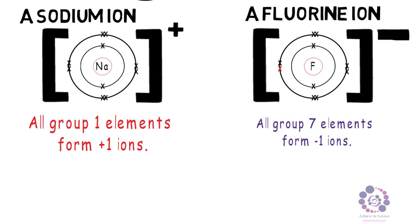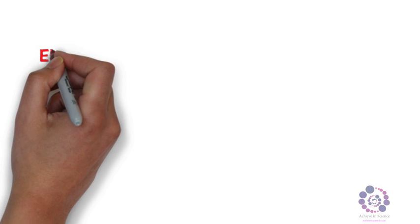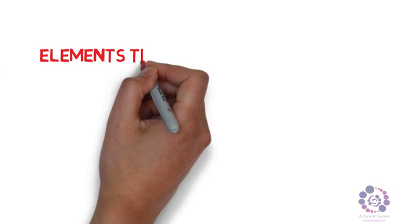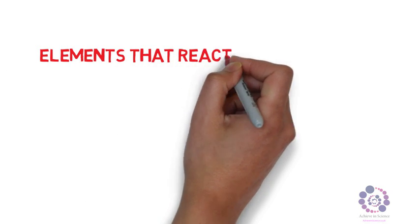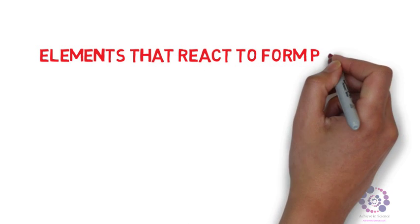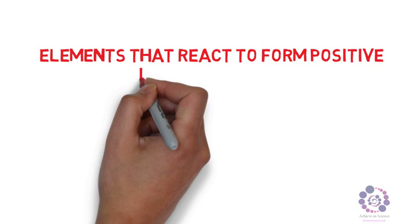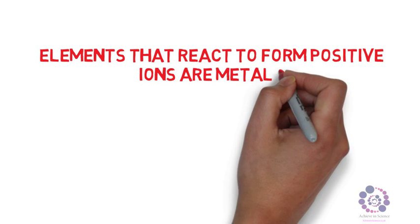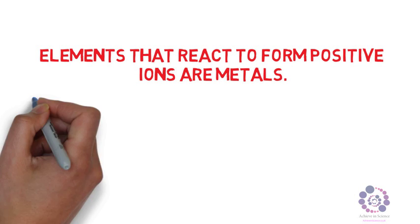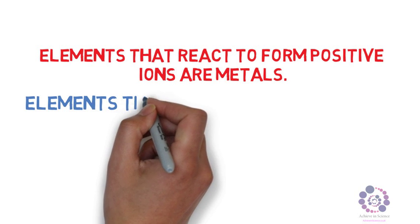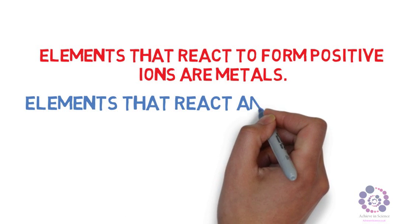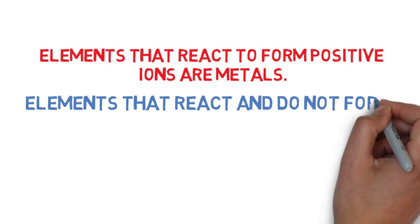As these are oppositely charged, they want to interact with each other. Therefore, elements that react to form positive ions are metals. Elements that react and do not form positive ions are called non-metals. As they are oppositely charged, they want to react with each other, and these reactions can be seen in other videos.